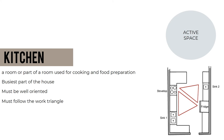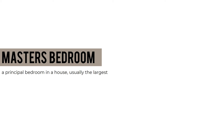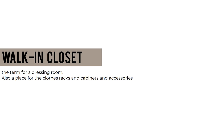The bedroom is a personal and private space for sleeping and personal care — a passive and very private space. The master's bedroom is the principal bedroom in the house, usually the largest — also a passive space. A walk-in closet is a dressing room for clothes, racks, cabinets, and accessories — also a passive space.